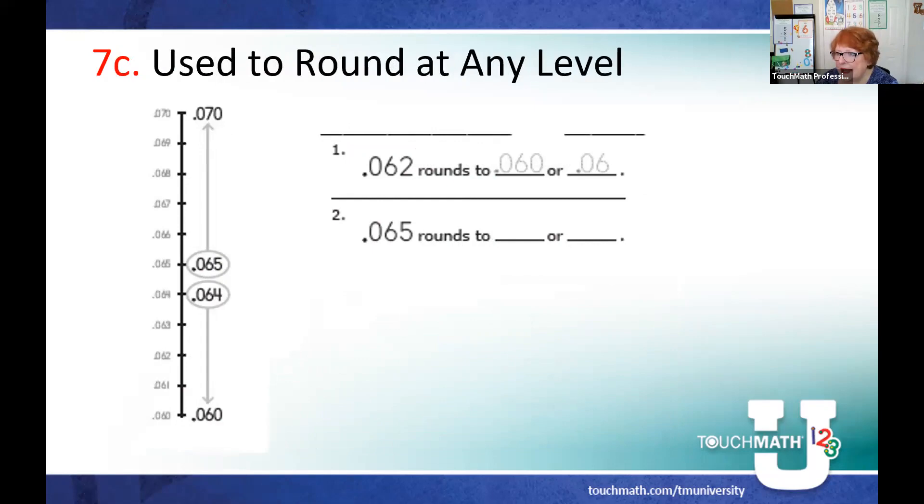We can use rounding at any level. So we used whole numbers. And then we can use decimals. The same thing applies. If I'm going to round 62, thousands, my starting point is 60, my ending point is 70, and then I mark off everything in between. Then all I have to do is go and find 62. Is it closer to 60 or is it closer to 70? The number line gives them the visual support that maintains that equal distance between points.